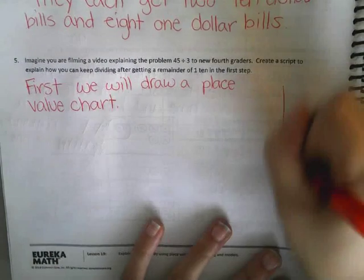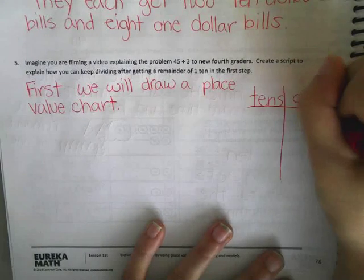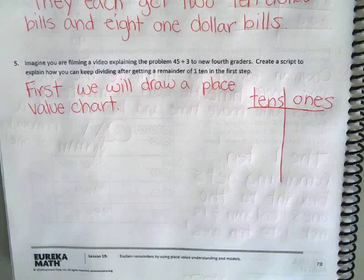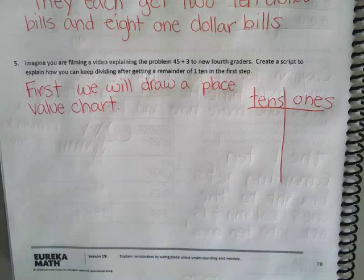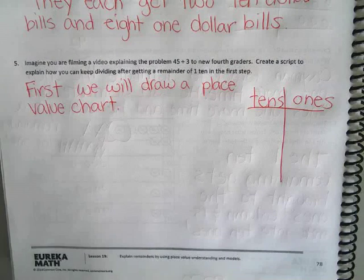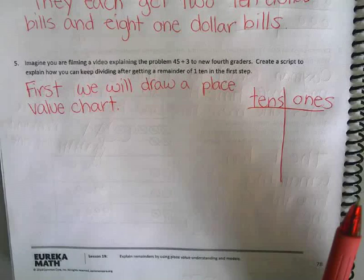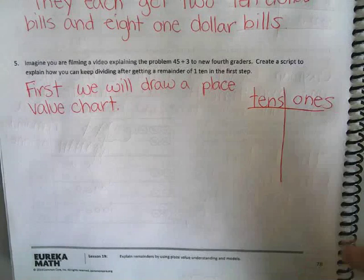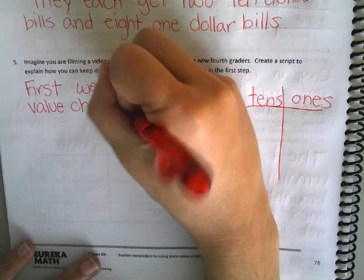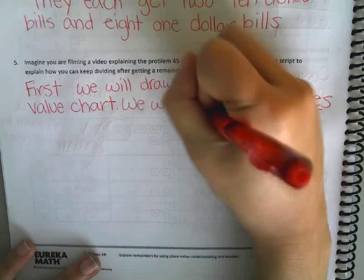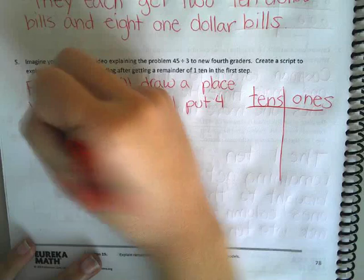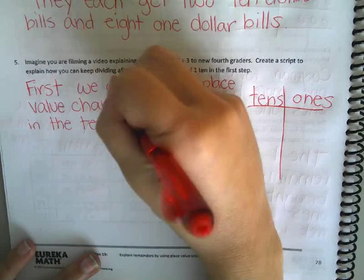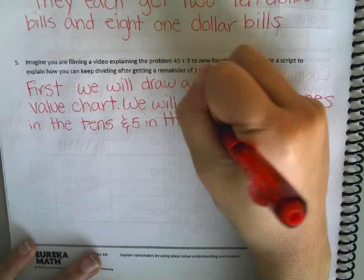Let's go ahead and do it so we have it. We have one thing we need to do before that. We need to put the four 10s in the 10s spot and the five 1s in the 1s spot. So let's say: we will put four in the 10s spot and five in the 1s. Let's go ahead and do that.